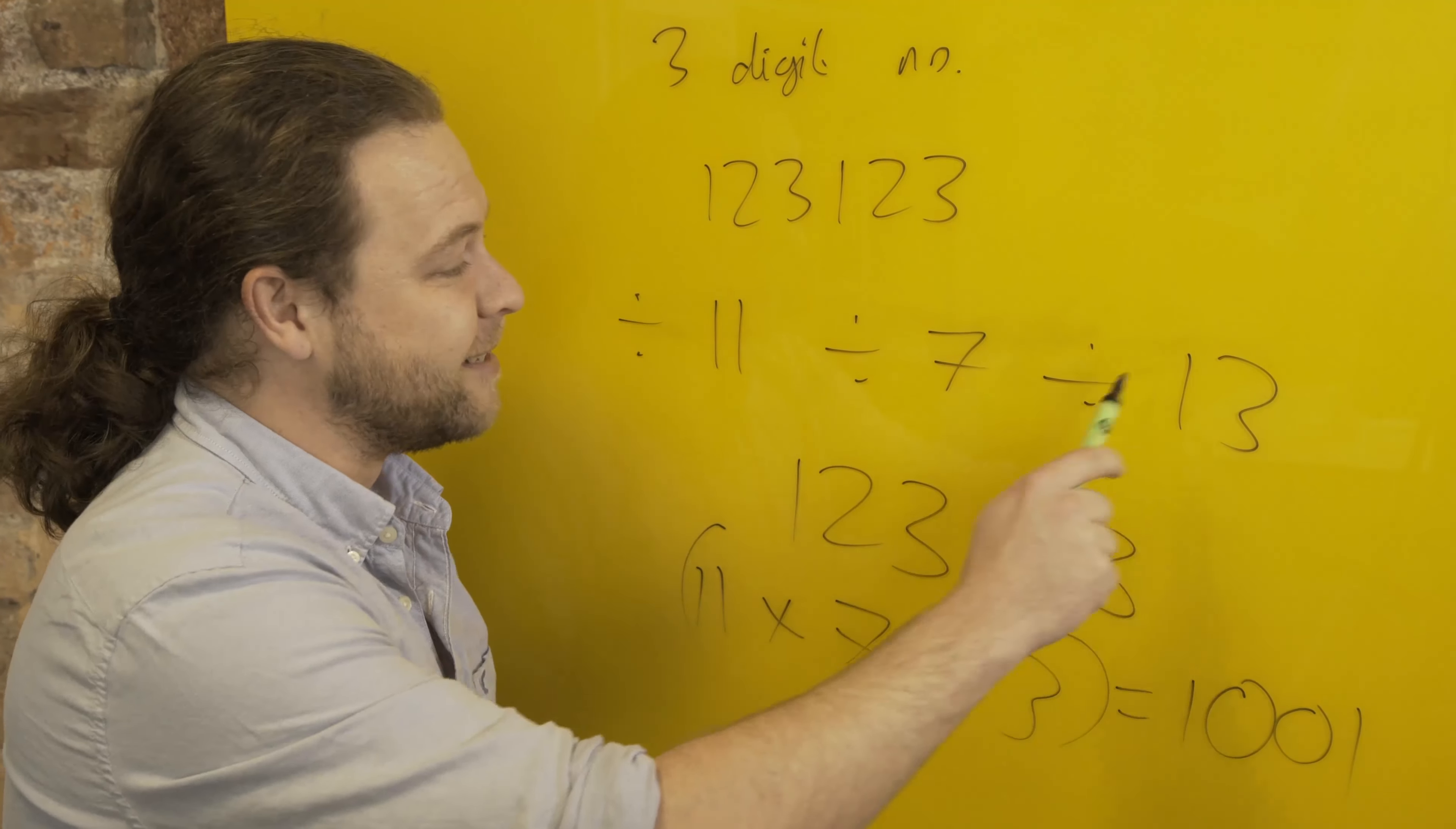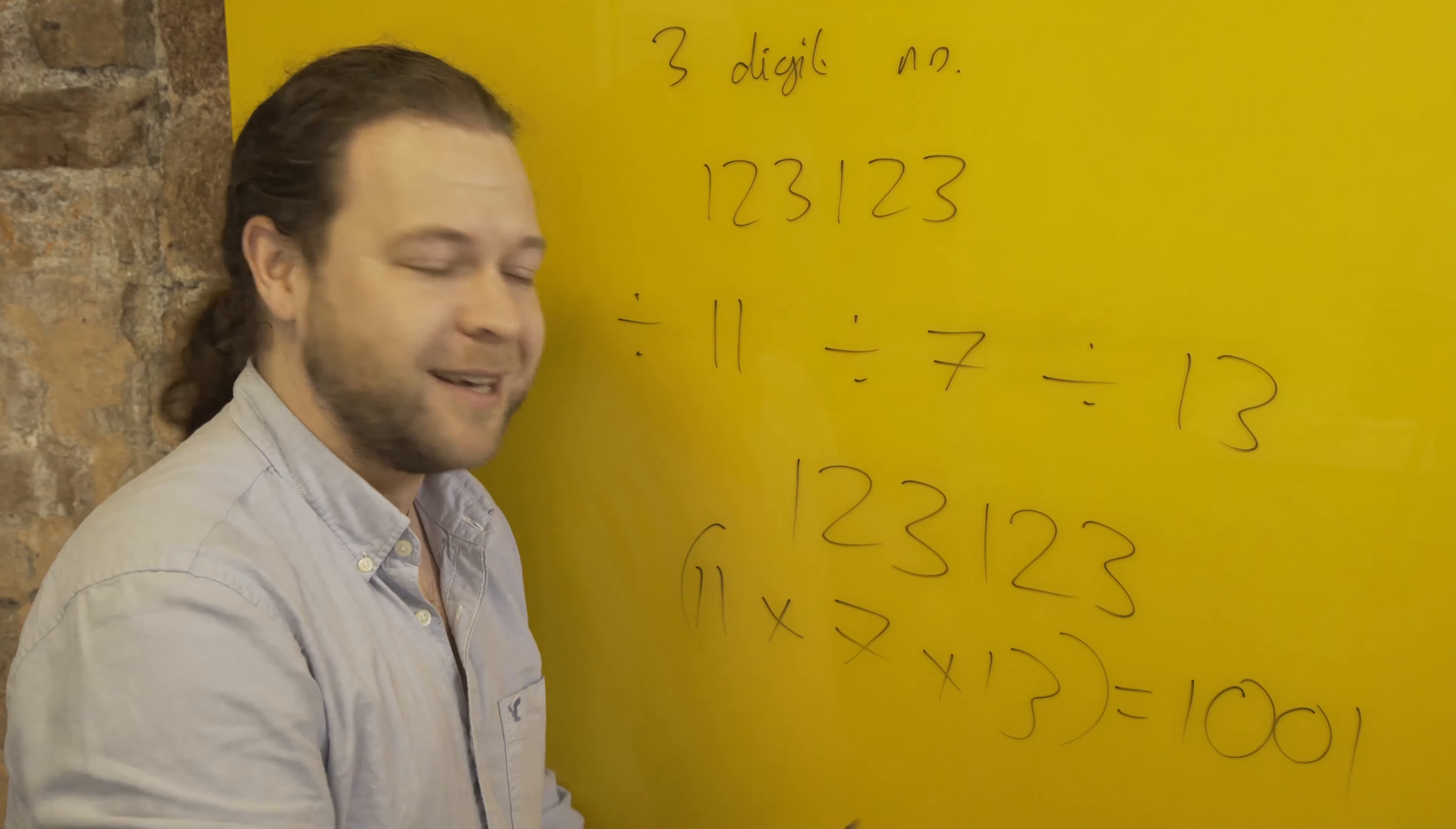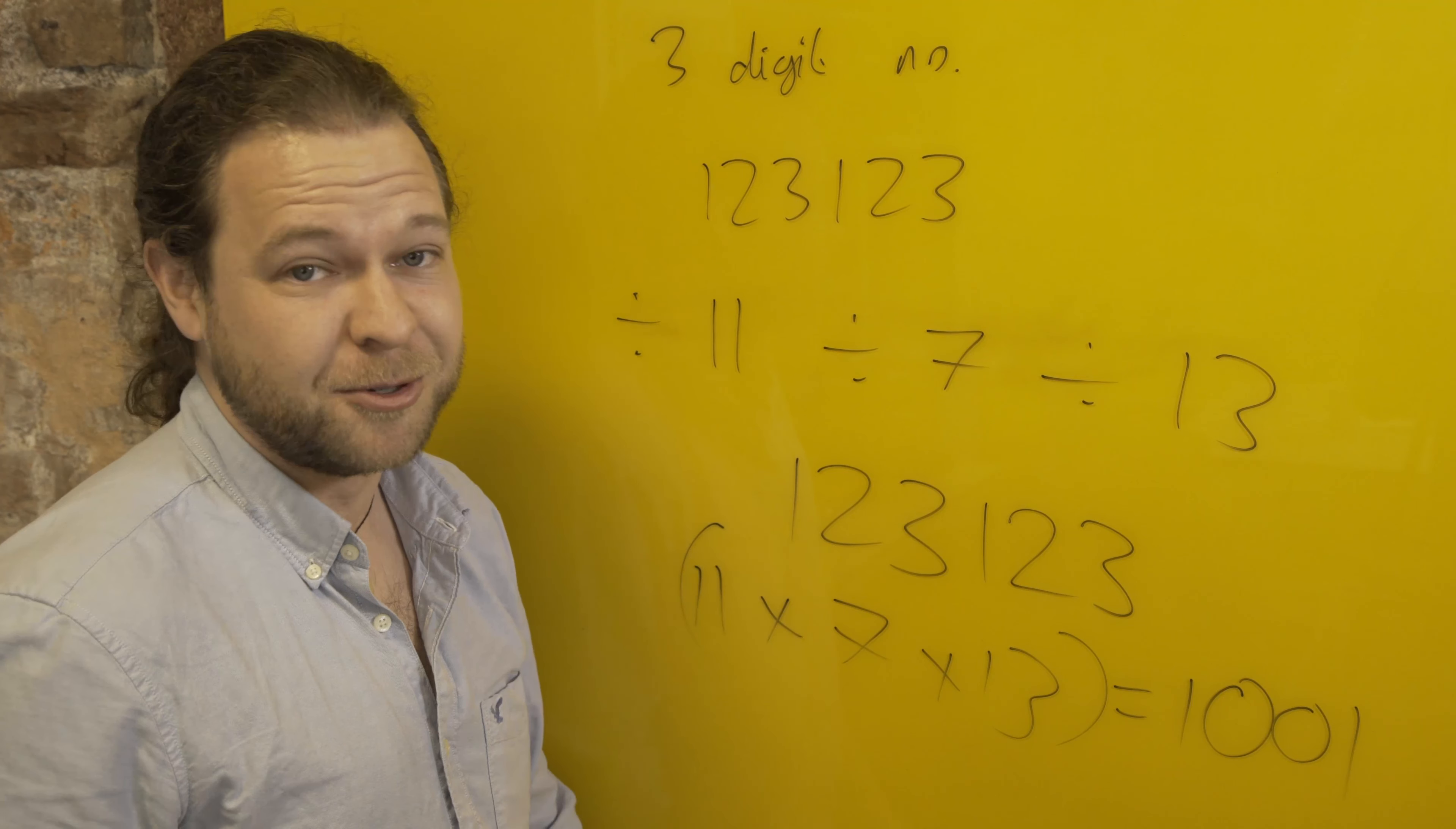But if you mask it with these lovely things—because there's a nice property of a thousand and one, it has these three prime factors—then we have a rather nice little mathematical magic trick. I hope you enjoyed it.